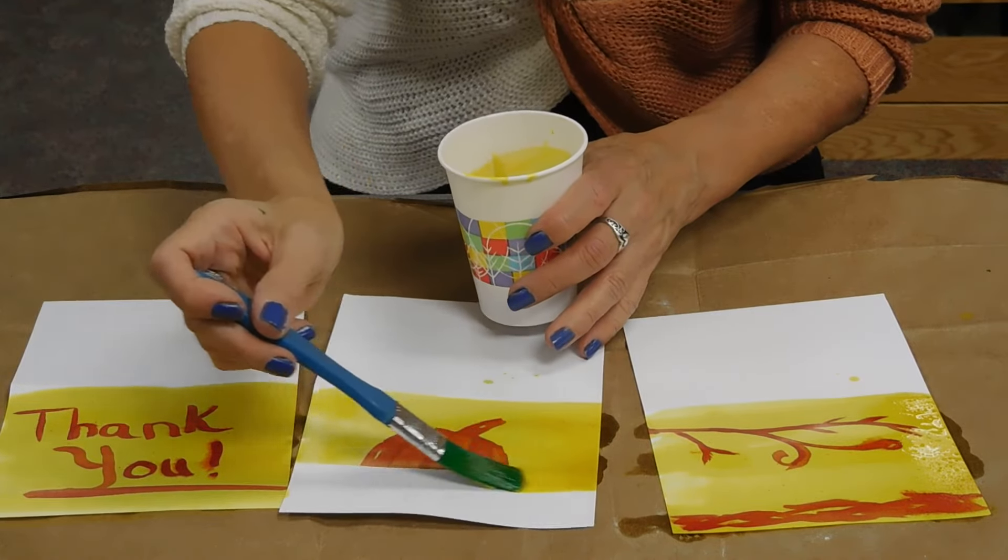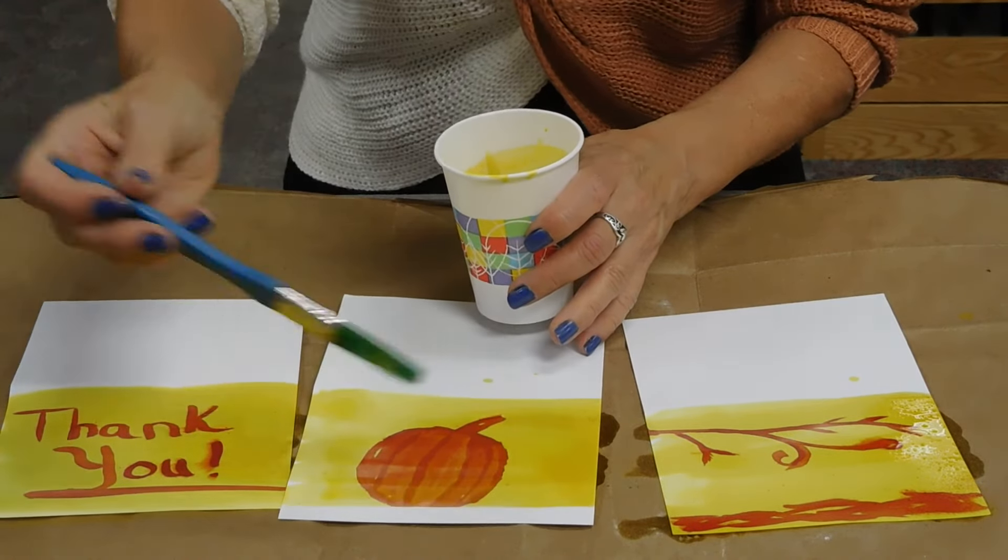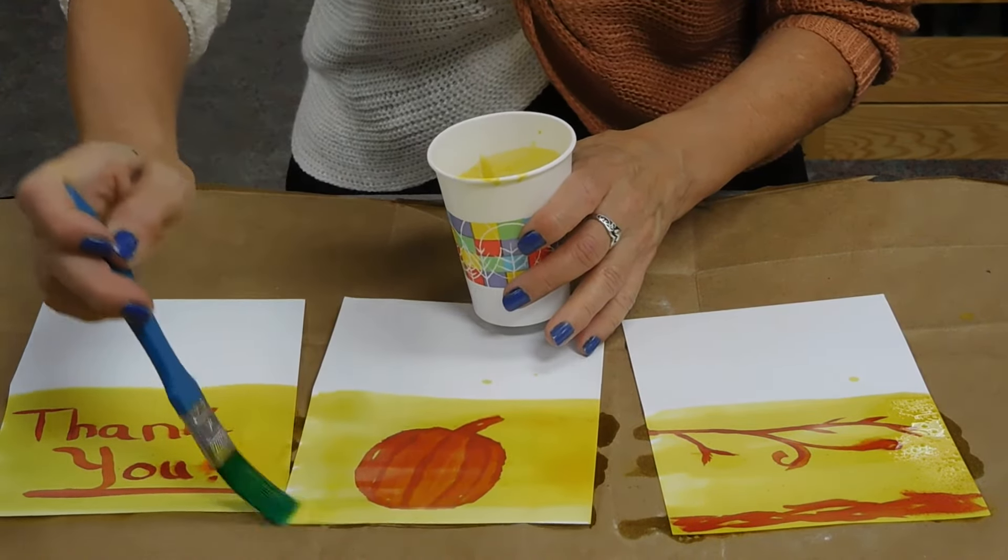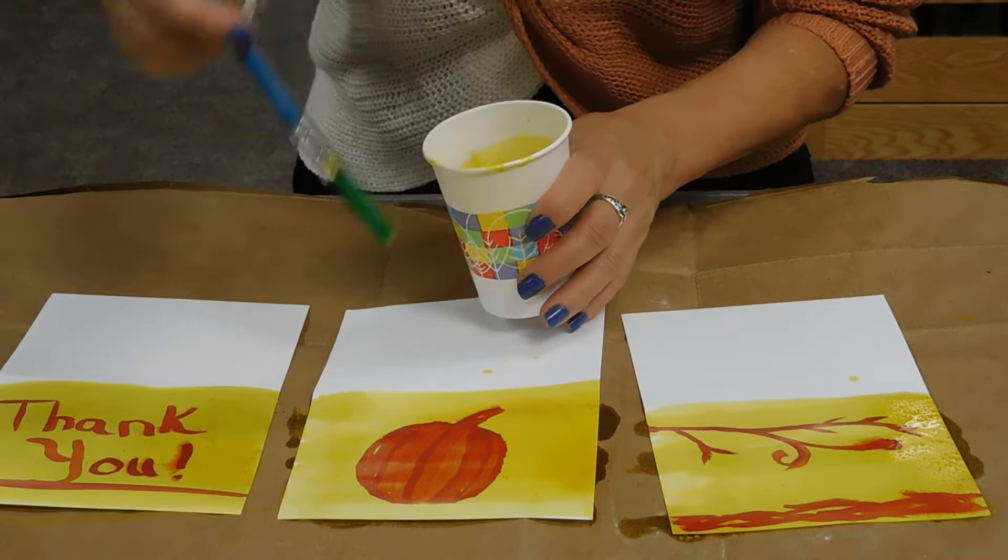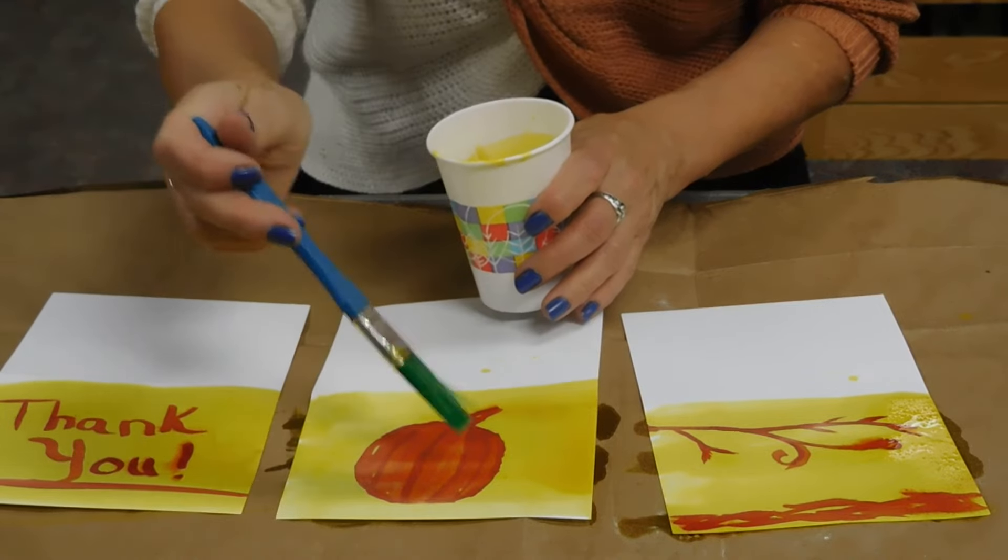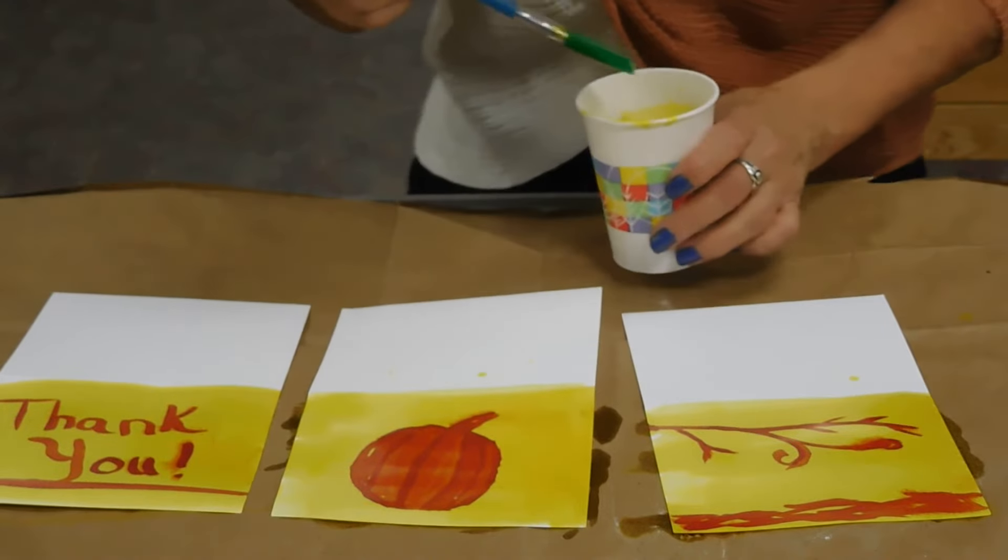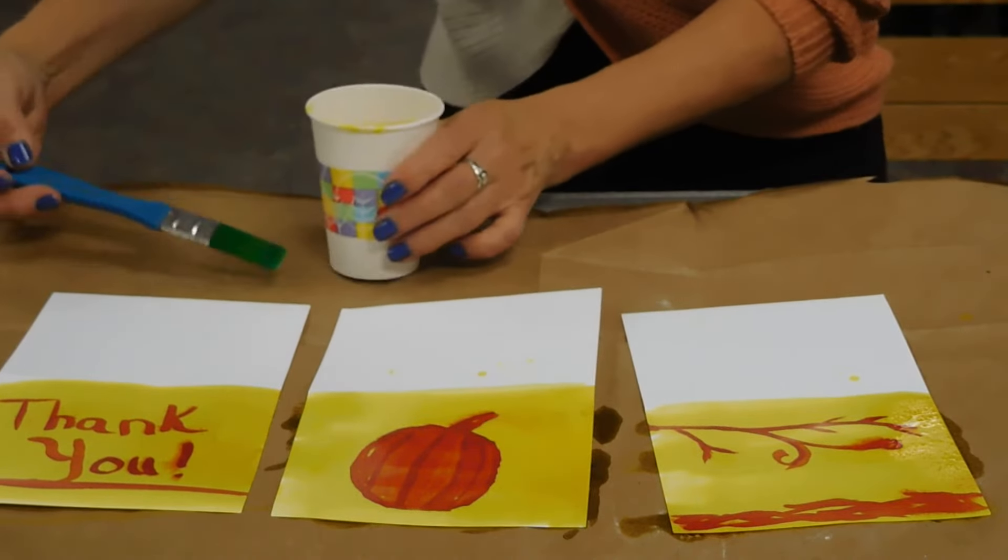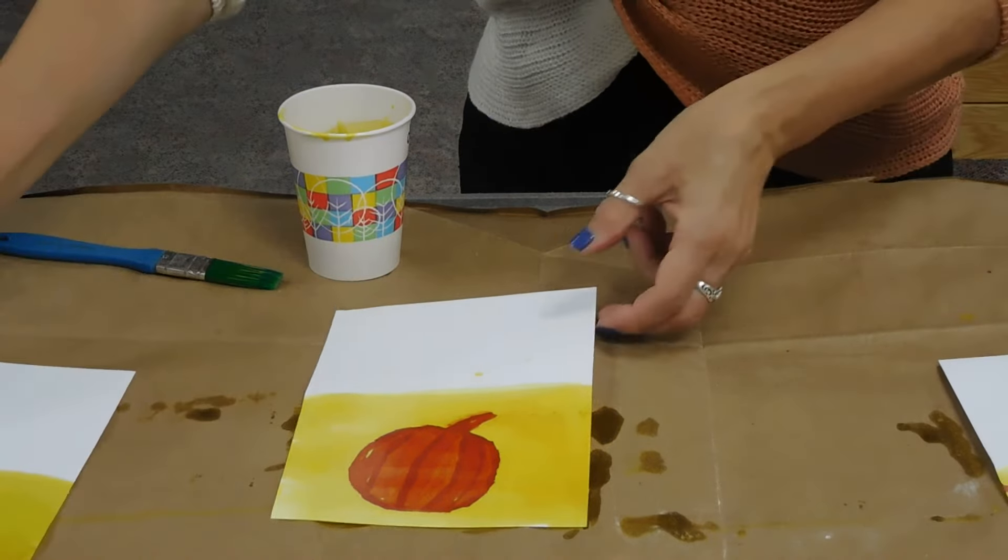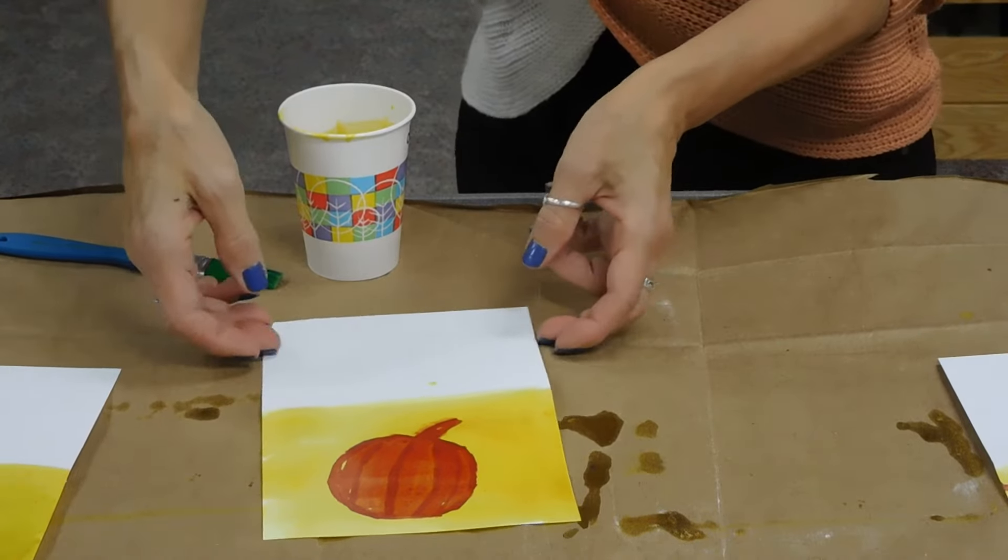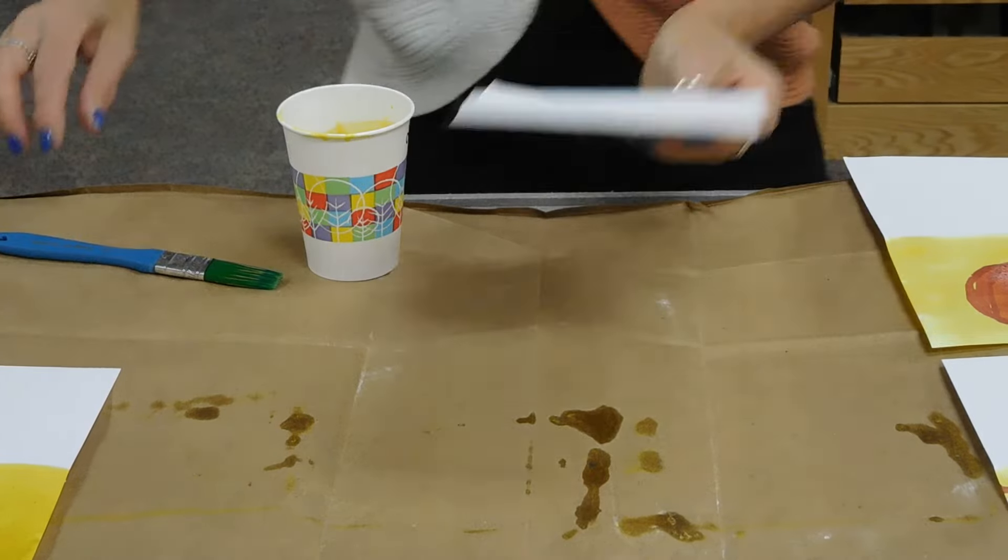So you can decide how you want to do this. Like with this pumpkin one, I did thicker lines and thinner lines. And you can see that, I think. And so now we're going to set those on the side to dry. And I'm just going to move them over to the side because we still have one more to paint on.